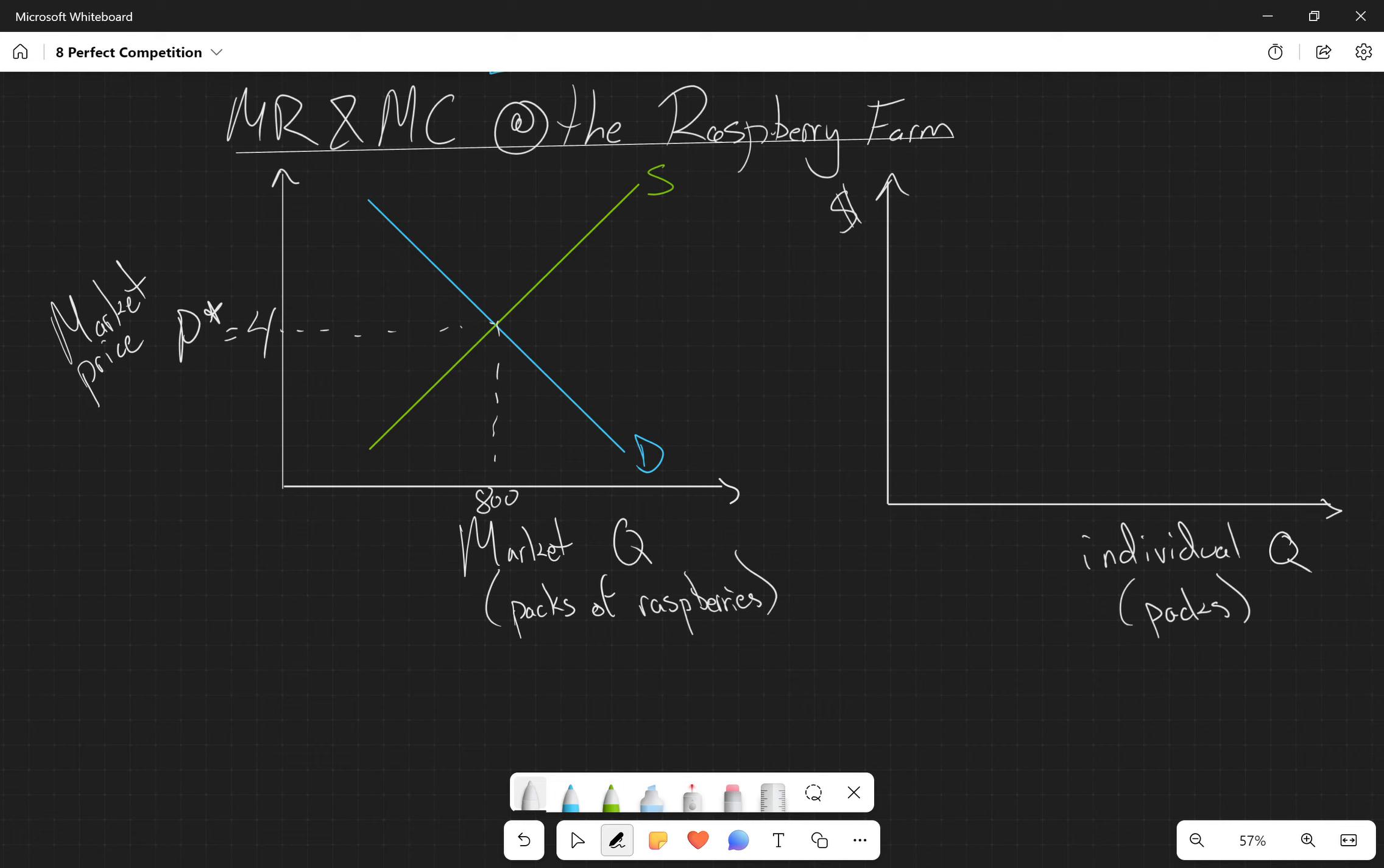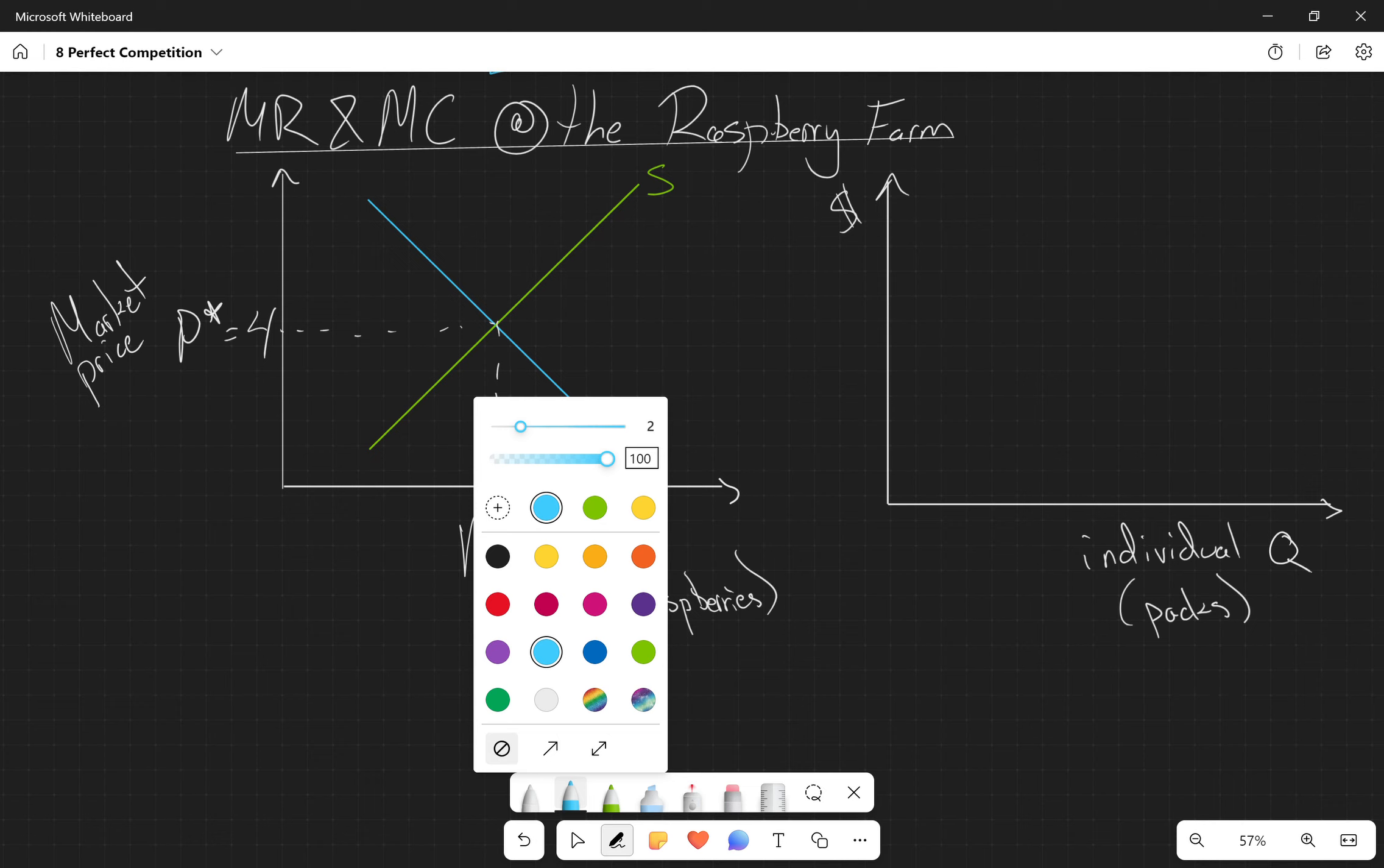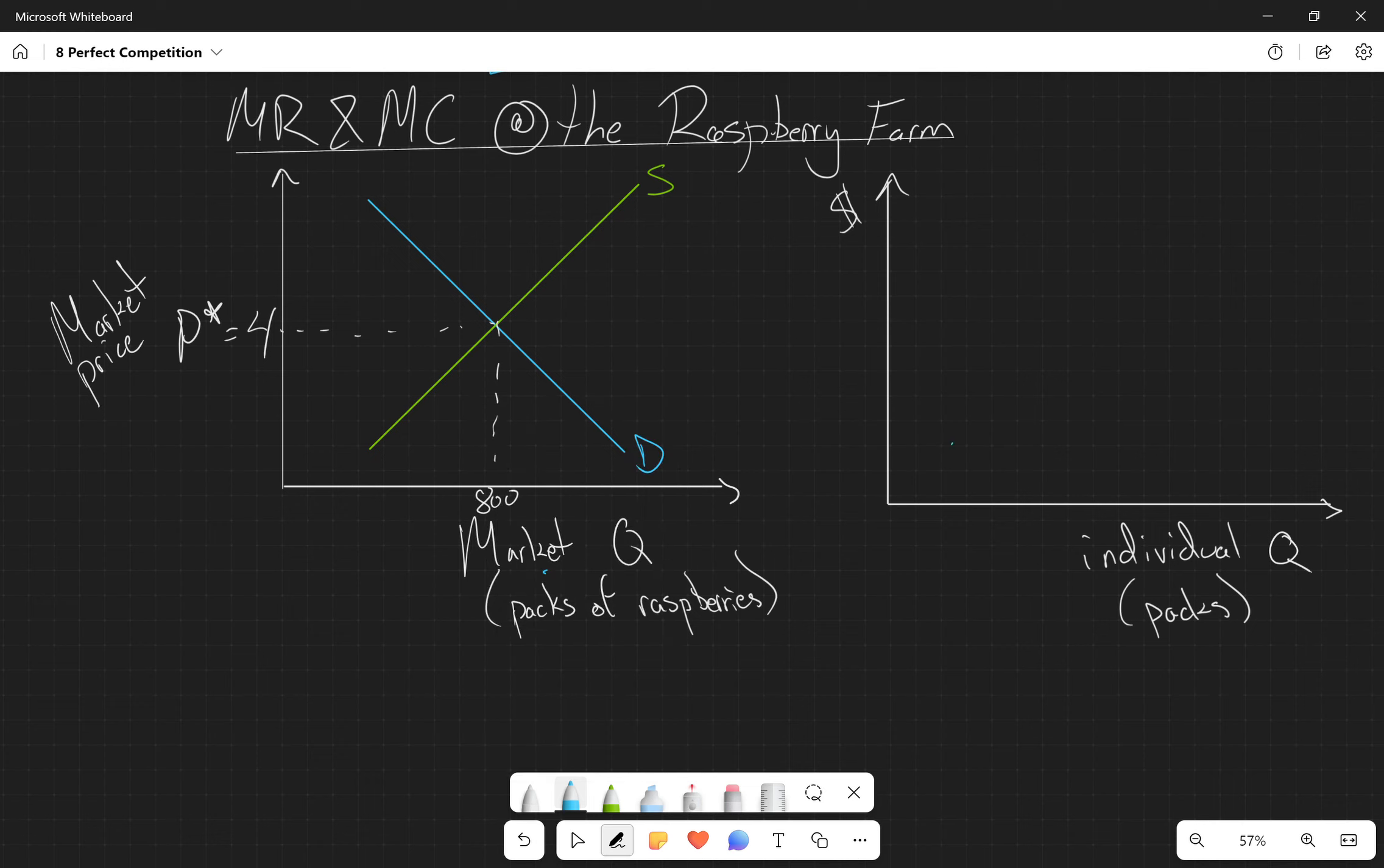Because raspberry production is a perfectly competitive industry, if we look specifically at this individual raspberry farmer, we're going to find that they have a marginal cost curve that looks something like this. It decreases slightly till some minimum and then it starts increasing at an increasing rate.